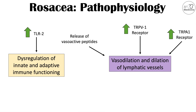There also seems to be some interplay with demodex mite infestation and H. pylori infection, which appear to increase activation of some of these receptors and release of vasoactive peptides in some patients. Not all of the pathophysiology is known, but these are some of the known factors in rosacea.